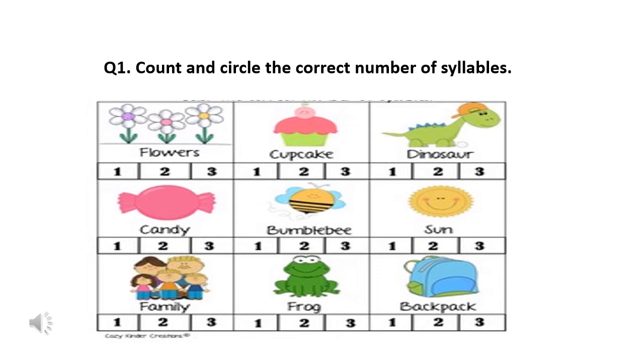Flowers. How many syllables are there? One, two, or three. Cupcake. One, two, or three syllables. Dinosaur. One, two, or three syllables. The next one is candy. Candy. How many syllables are there? One, two, or three.